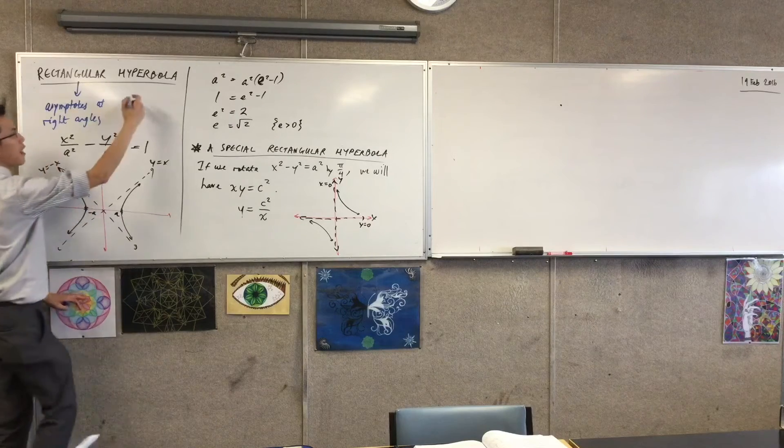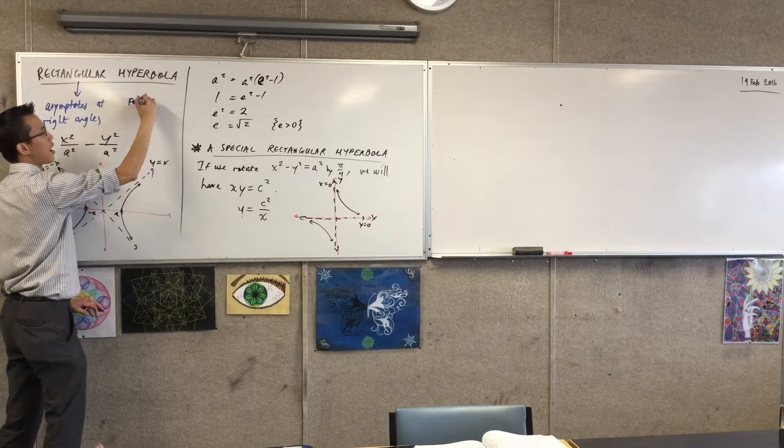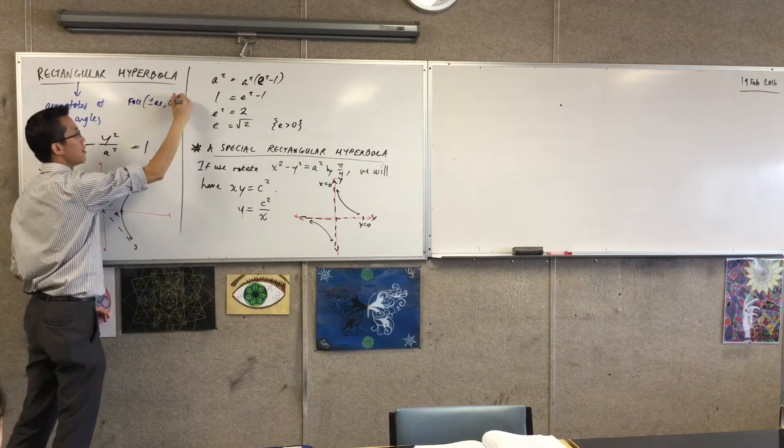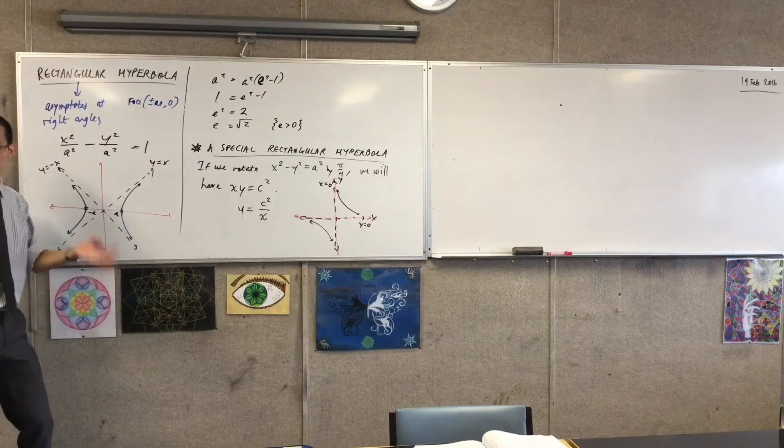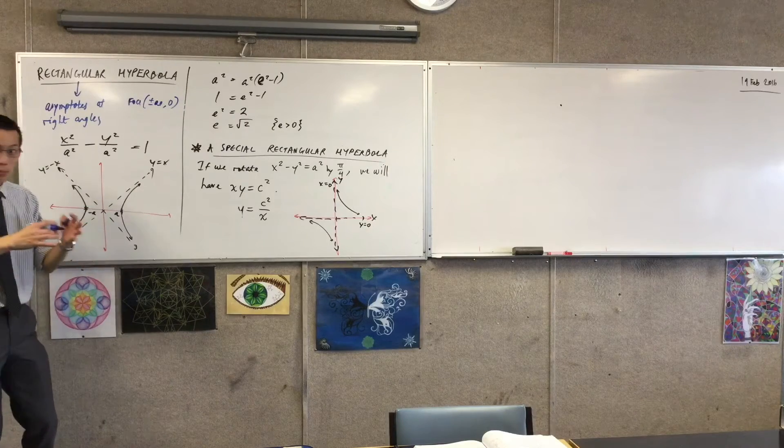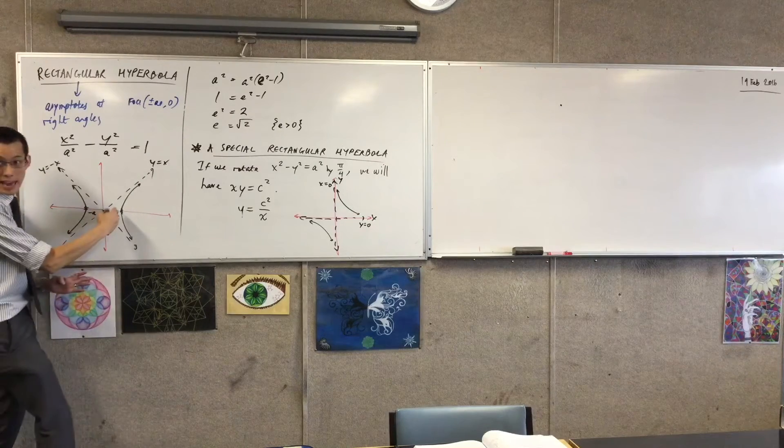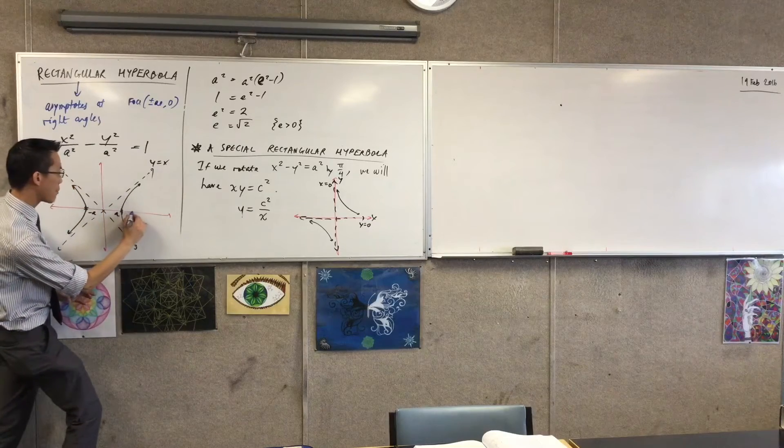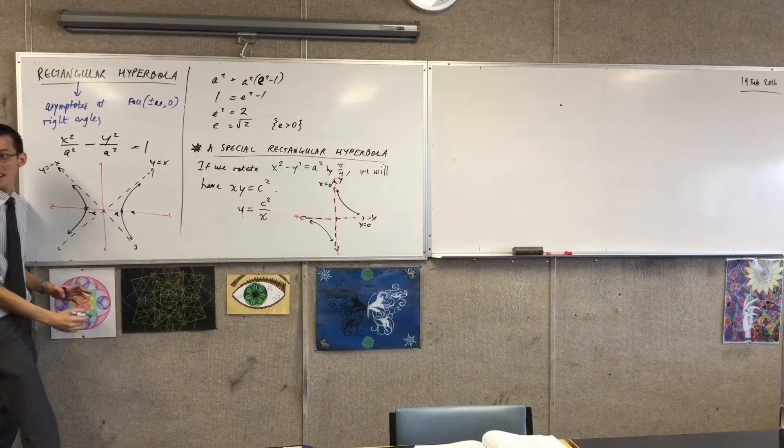So because I would usually say that the foci are at plus or minus Ae comma zero, but I know exactly what A is, right? It's root two. So that's like 1.4-ish. So if that's where A is, then I've got to be a bit further out, right? So on my diagram, I'm guessing it'll be somewhere like that.